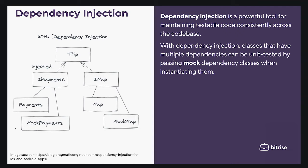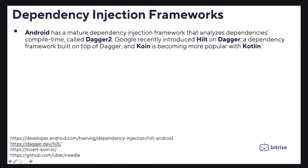Manual dependency injection — creating all interfaces then hard-coding all dependencies — works fine when there are few such dependencies. However, as the number of components and dependencies grow, maintaining and updating them becomes more difficult. Spotting things such as circular dependencies also becomes tricky.